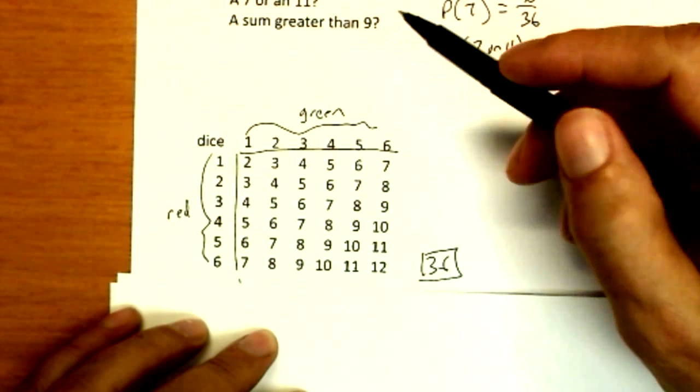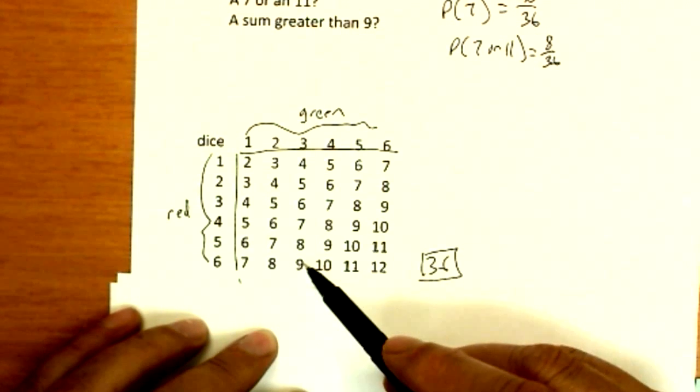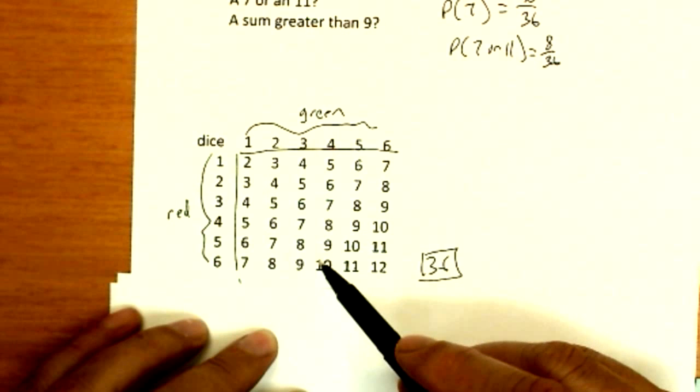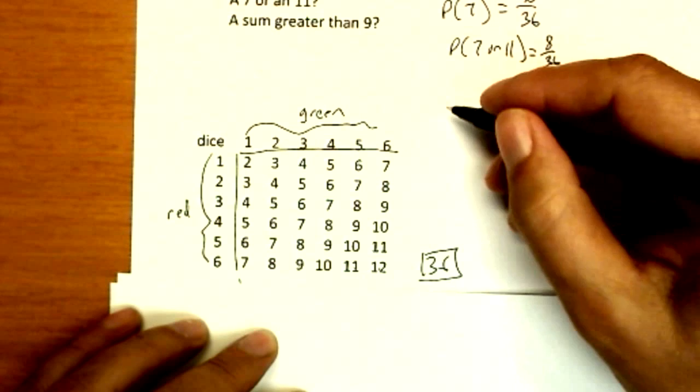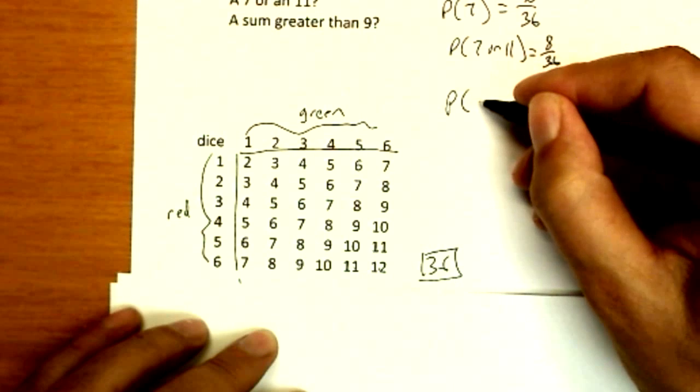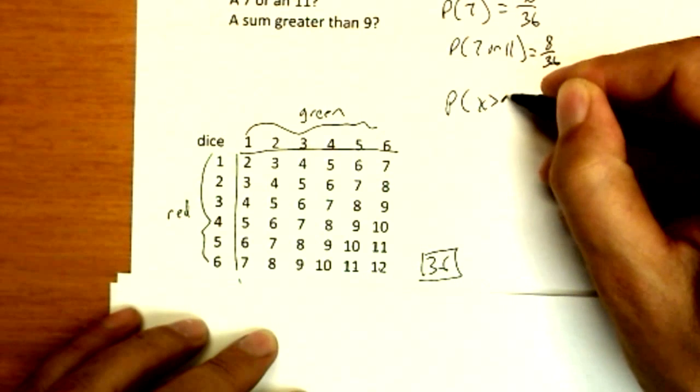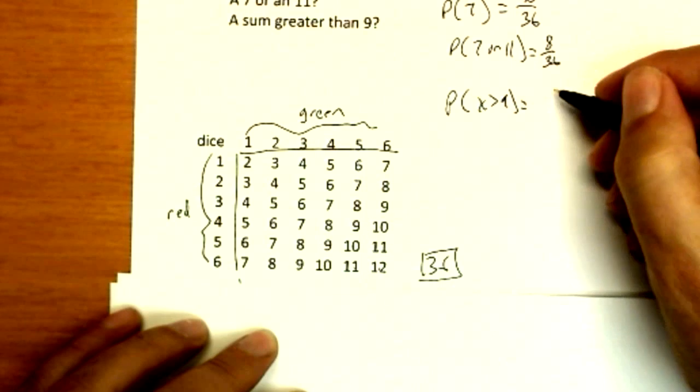Probability of sum greater than nine. Okay, so greater than, it's just strictly greater than nine as I've got it written. These three tens, so three, four, five, six. So the sum greater than nine would be six over 36.